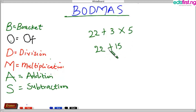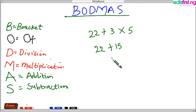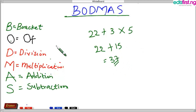So we bring down 22 plus 3 times 5, which gives us 15. Now we are left with just one operator, so we simplify: 22 plus 15 gives us 37. That is our answer. You see, this enables us to arrive at the same answer whenever a particular problem is given.